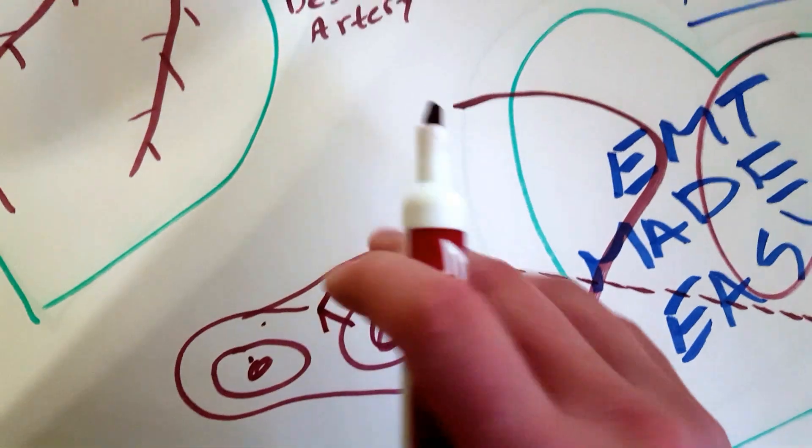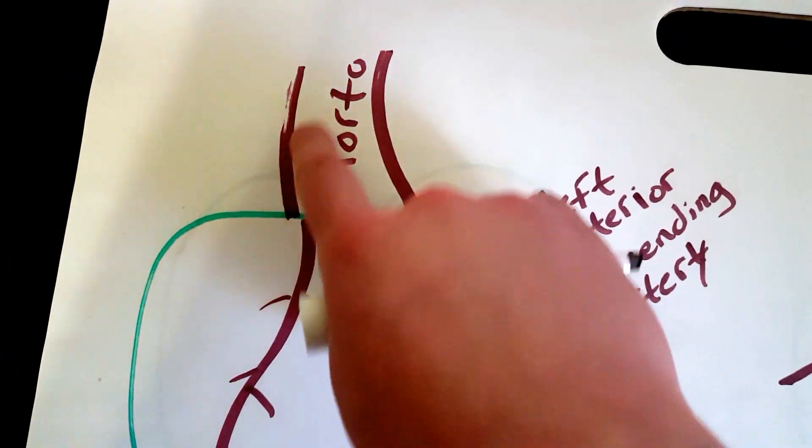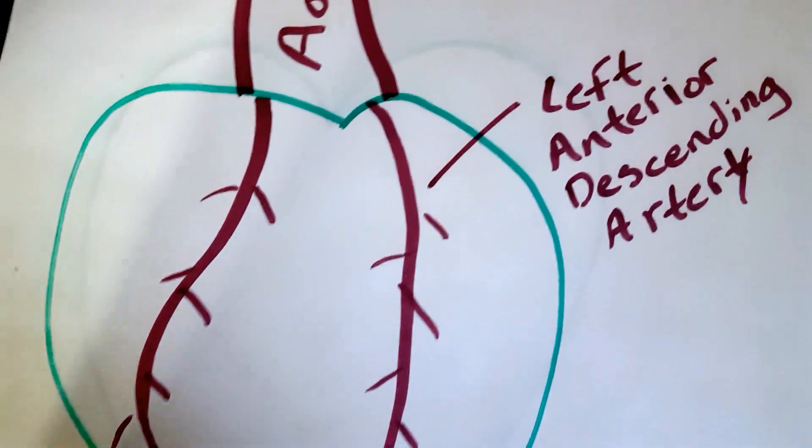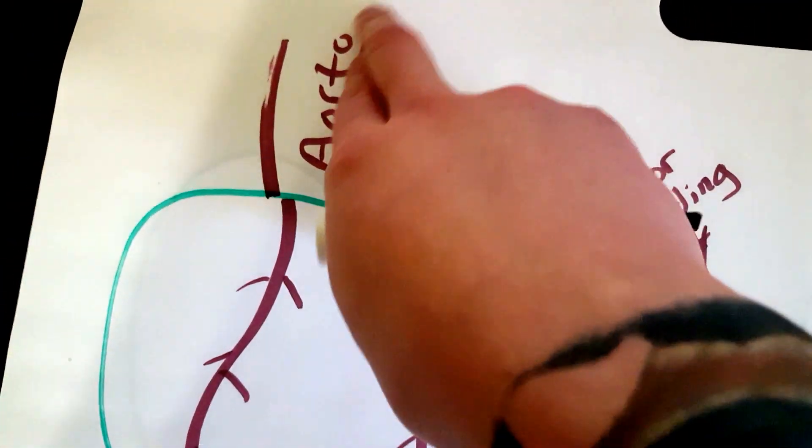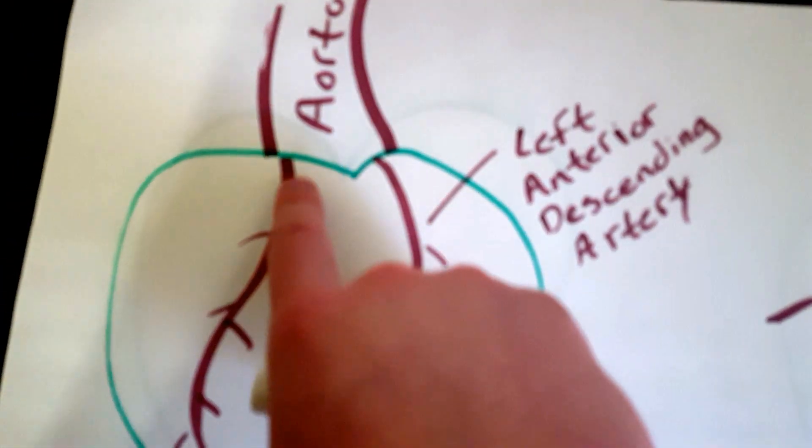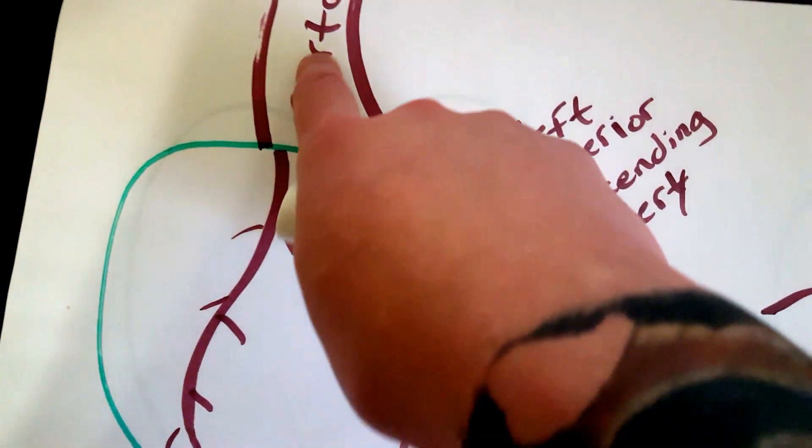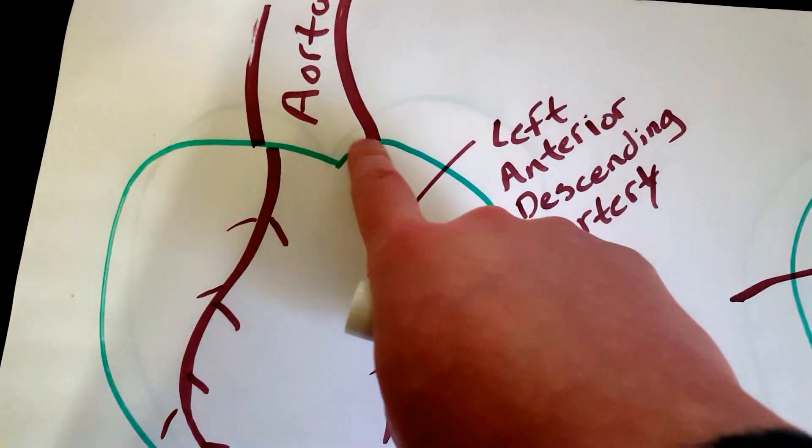So the way this works is that as the aorta is leaving—so the aorta is that vessel that takes blood from your left chamber to the rest of your body—you have these vessels that actually branch off of the aorta as soon as it leaves the heart and these are called the coronary arteries.